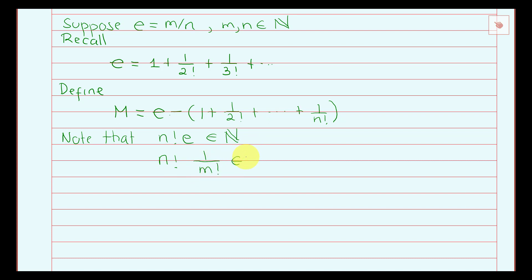n factorial divided by m factorial is also a positive integer for m equals 1 up to n. Why? Because if m is less than or equal to n, then when we write down n factorial we multiply 1 times 2 times 3 all the way up to m, then m plus 1, all the way up to n. So n factorial contains m factorial as a factor, which implies this expression is a positive integer.